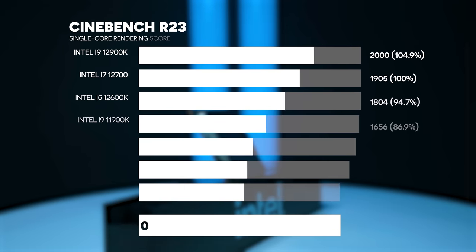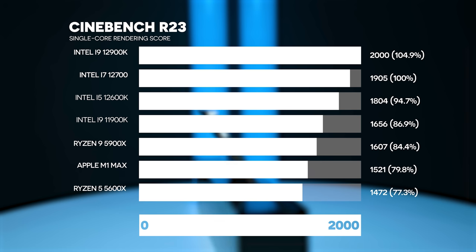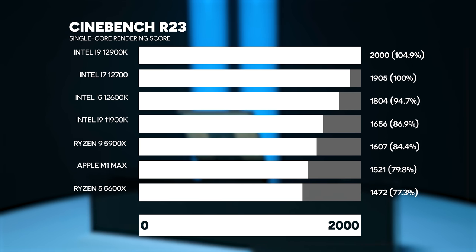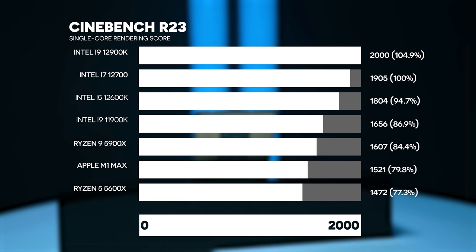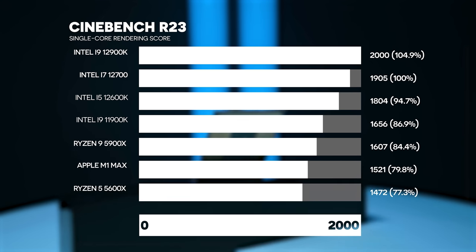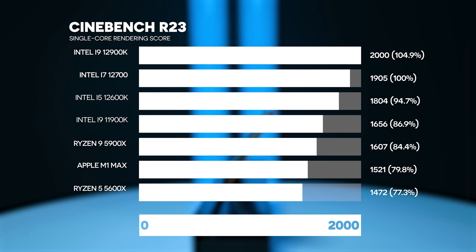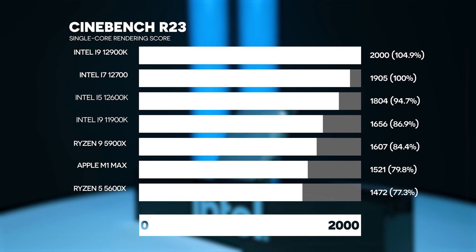In Cinebench R23 single-core score, the i9 12900K is roughly five percent higher and the 12600K is roughly five percent lower, so the 12700 slots very nicely in the middle between the two. Looking at the Ryzen 5000 series, the 5900X is about 15 percent slower, and the 5950X is a little bit higher than the 5900X but still roughly about 15 percent slower than the best Ryzen 5000 can offer.